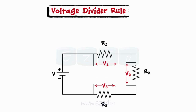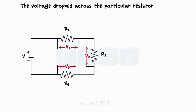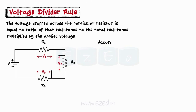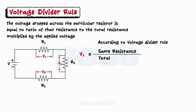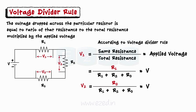In series circuits, a voltage drop is observed across every single resistance. When circuits are complex, we use the voltage divider rule to find the voltage drop across a particular resistance. It states that the voltage drop across a particular resistor equals the ratio of that resistance to the total resistance, multiplied by the applied voltage. Thus, V1 = R1/(R1+R2+R3) × V, V2 = R2/(R1+R2+R3) × V, and V3 = R3/(R1+R2+R3) × V.